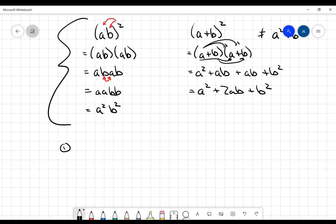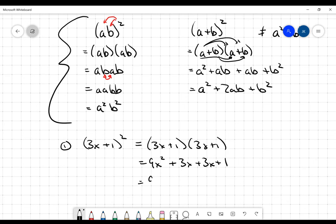Let's take a look at a couple problems. Let's say I have 3X plus 1, and I want to square that. That becomes 3X plus 1 times 3X plus 1, which gives me 9X squared plus 3X plus 3X plus 1. I can add those two middle terms together to get 9X squared plus 6X plus 1.